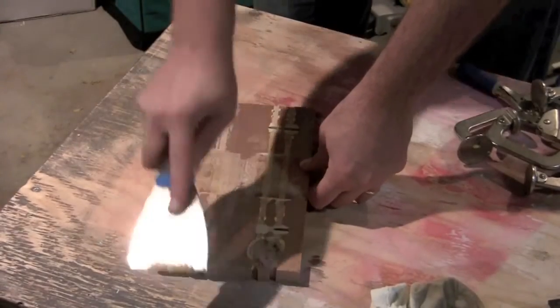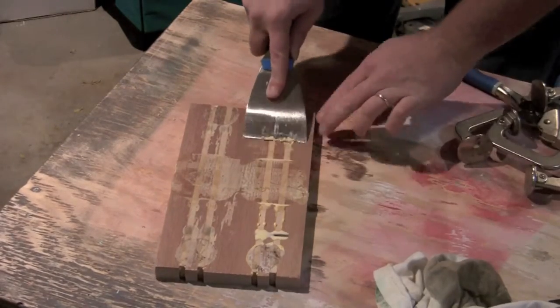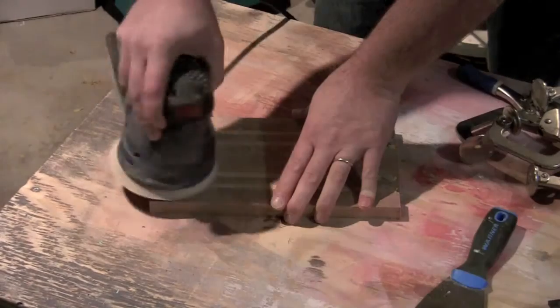Once the glue has dried, I used a paint scraper to get the majority of the glue squeeze out off the piece. Then I went and did a light sanding.